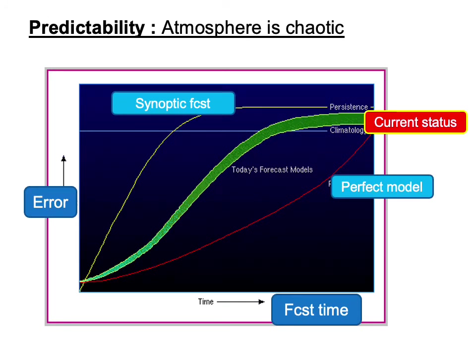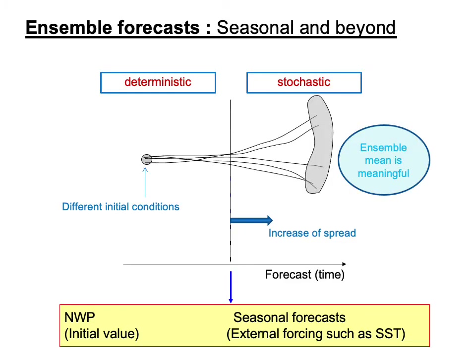This schematic illustrates predictability. The x-axis is forecast time and the y-axis is error magnitude. Continuous efforts are given to improve the accuracy of the model and initial conditions. It is stressed that even for a perfect model, error accumulates with time because the governing equations themselves are approximations. Also, there is initial condition uncertainty, which further makes error accumulate. Considering the chaotic nature of the atmosphere, ensemble methods are utilized beyond the deterministic forecast.